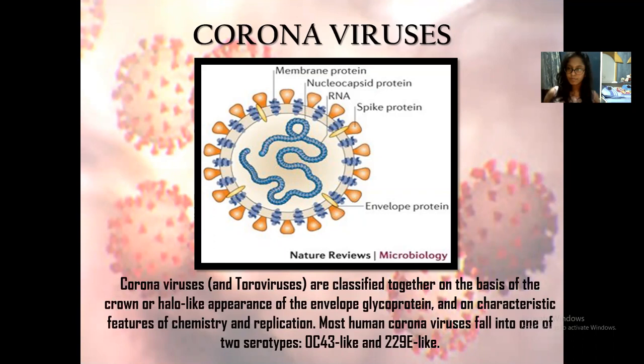Four of the seven known coronaviruses that sicken people cause only mild diseases, while three can cause more serious or even fatal diseases. SARS coronavirus, or SARS-CoV, causes severe acute respiratory syndrome. Middle Eastern respiratory syndrome is caused by the MERS coronavirus, called MERS-CoV.